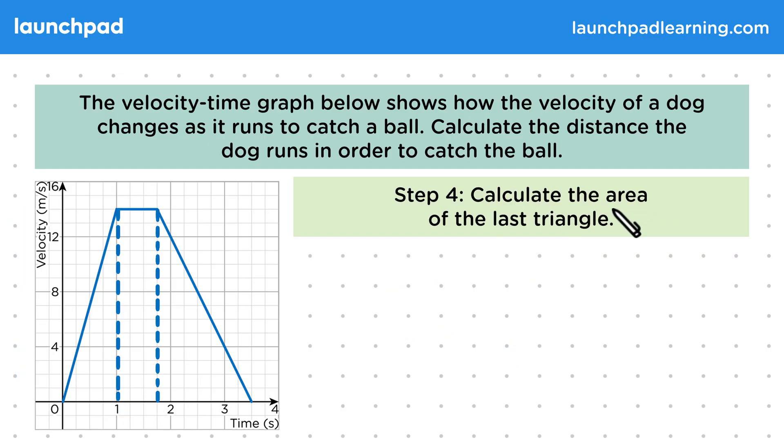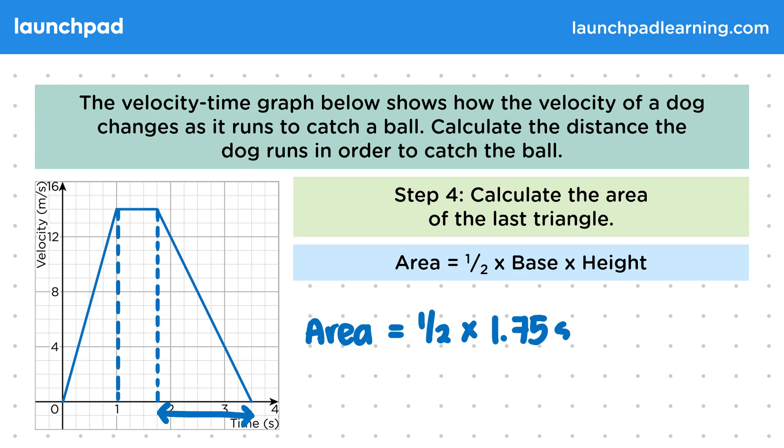Then in step 4, calculate the area of the last triangle. So we'll be going back to our previous formula for the area of a triangle, so the area is equal to half times base times height. So this area is a half times the base, which is 1.75 seconds, times the height, which is 14 metres per second. So this gives us an area, and therefore distance, of 12.25 metres.